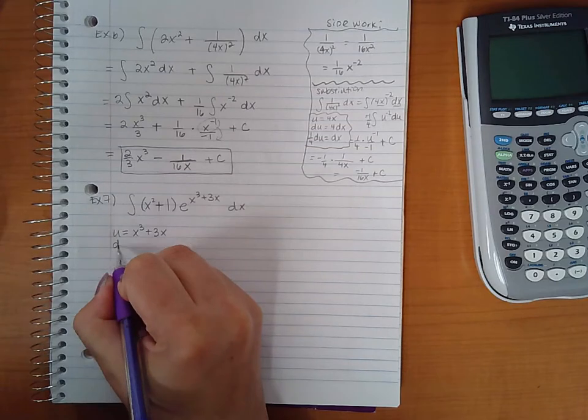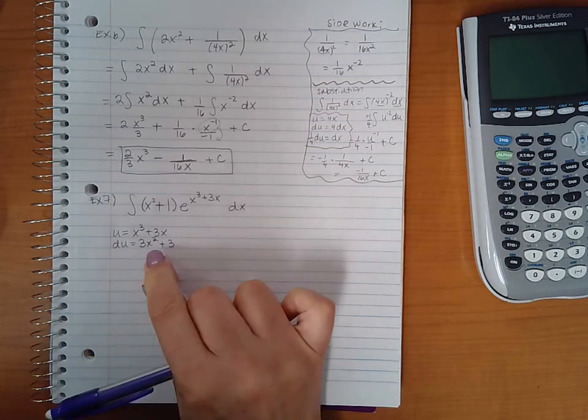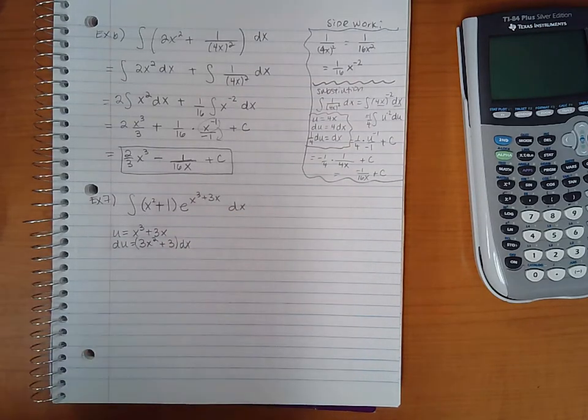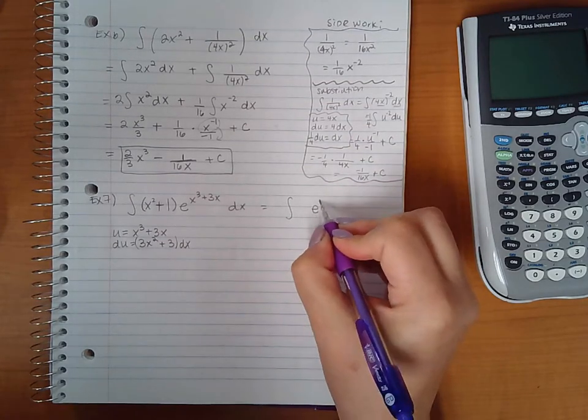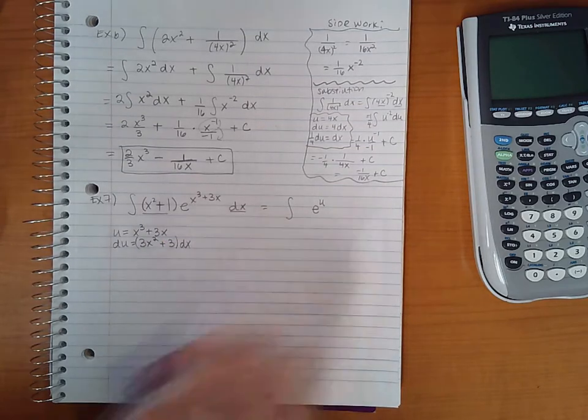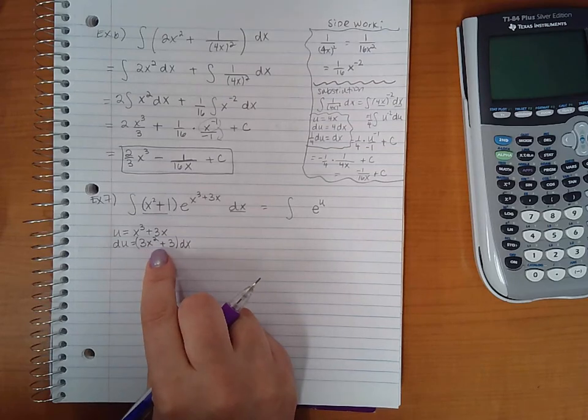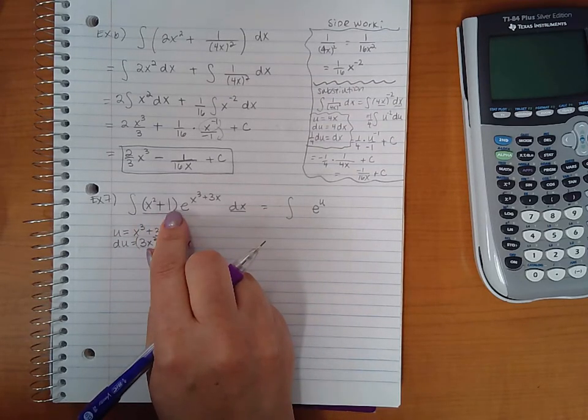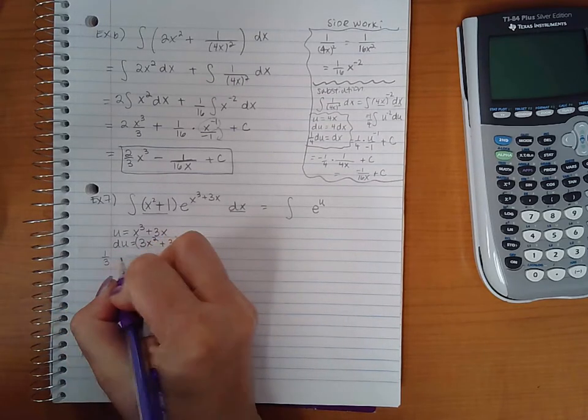So if I take du, that would be 3x squared plus 3, and instead of putting dx and dx I'm just going to put a parentheses and a dx. So this expression here will become e to the u, but I don't know what to plug in for this and this. I almost have that, but if you notice this is a multiplier of that. If I take that and I multiply it by 3, I end up with what I have here for du. So what I'm going to do is I'm going to multiply both sides by one third.